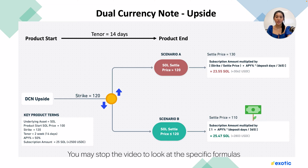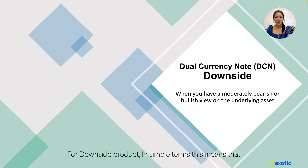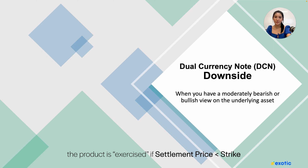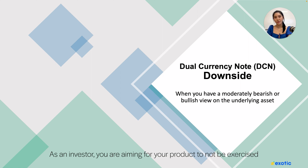You may pause the video to look at the specific formulas. For the downside product, in simple terms, this means that if the settlement price is below the strike, the product is exercised. The product is exercised if settlement price is less than strike, and does not exercise if settlement price is greater than or equal to strike. As an investor, you are aiming for your product to not be exercised, so you earn the yield without any change to your invested capital.